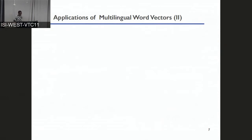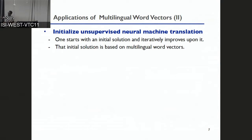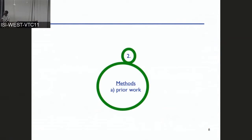Another more recent application of multilingual word embeddings is their role in neural machine translation, where one wants to start with some initial solution and then improve it using ideas from back-translation and adversarial training. The idea is to use multilingual word embeddings to provide that initial solution. That is the motivation and problem setup.